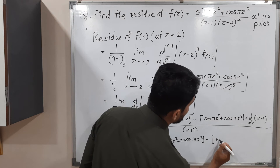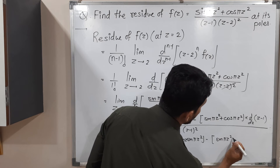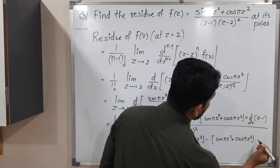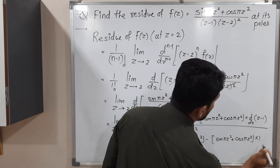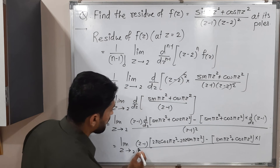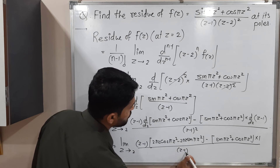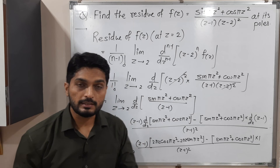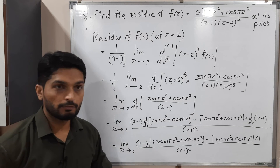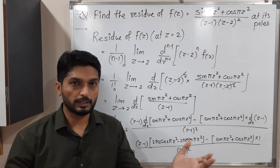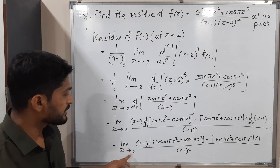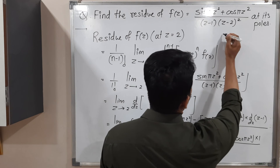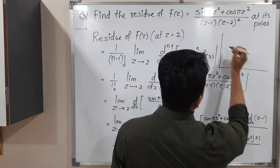Completing the expression: minus the bracket sin(πz²) + cos(πz²) times the derivative of (z−1), which is 1, divided by (z−1)². I will not simplify this further — I will directly apply the limit by substituting z=2 everywhere.